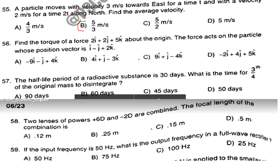Question number 56. Find the torque of a force 2i + 2j + 5k about the origin. The force acts on the particle whose position vector is i − j + 2k. The answer is Option C: 9i + j − 4k.